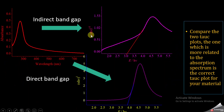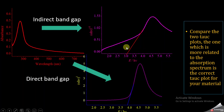Here is alpha·hν raised to power 1/2 plotted against energy in electron volts. You get a plot like this, where you find the band gap by drawing a straight line to the x-axis, and this value on the x-axis gives the value of the indirect band gap of your material.